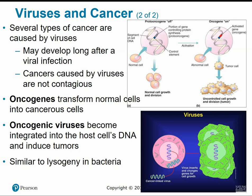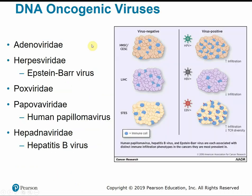The defining feature of oncoviruses — their ability to integrate into host cell DNA — is very similar to lysogeny in bacteria. Examples of DNA oncogenic viruses include adenoviridae, herpesviridae causing Epstein-Barr virus, poxviridae, papovaviridae including the human papillomavirus that can cause cervical cancer, and hepadnaviridae — hepatitis B virus, which can cause liver cancer.